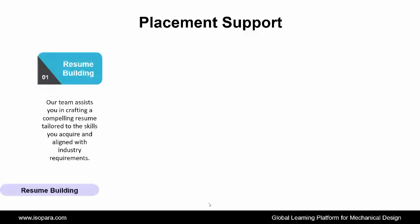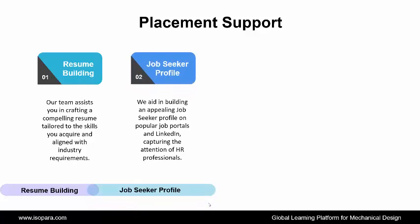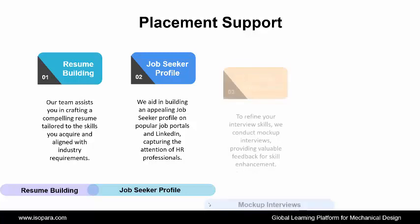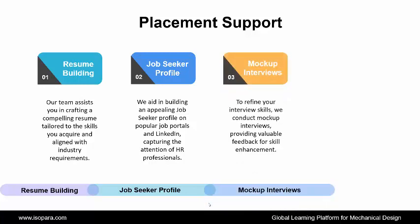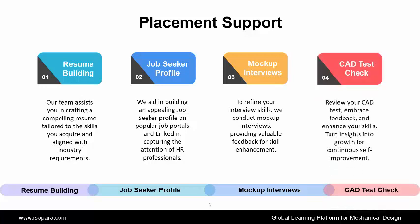Now, the final section is Placement Support. IsoPara provides placement support to all learners through the following ways. First is Resume Building — our team assists you in crafting a compelling resume tailored to the skills you acquire, aligned with industry requirements. Second is Job Seeker Profile — we aid in building an appealing job seeker profile on popular job portals and LinkedIn, capturing the attention of HR professionals. Third is Mockup Interviews — to refine your interview skills, we conduct mockup interviews, providing valuable feedback for skill enhancement. And the last is CAT Test Check — review your CAT test, embrace feedback, and enhance your skills. Turn insights into growth for continuous self-improvement.